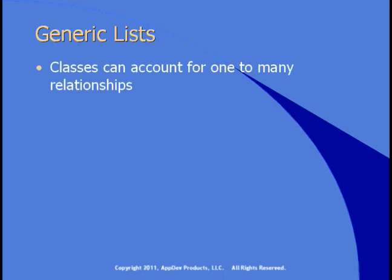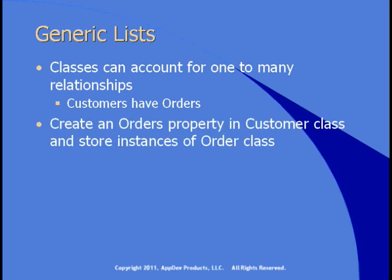As you create classes in your applications, you'll find yourself often wanting to account for one-to-many relationships. For example, customers have orders. You'd like to create an orders property in the customer class and store instances of the order class in there. So if a customer has four orders, that orders property would have four instances of the order class. One way you can do that is to use an ArrayList.